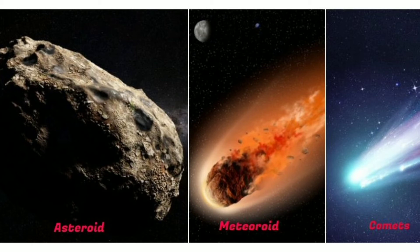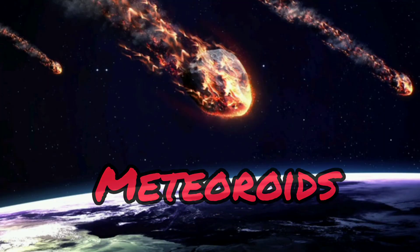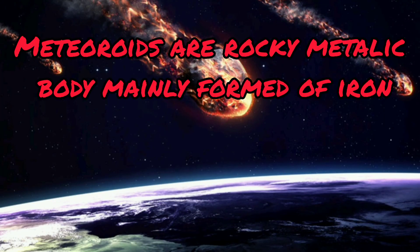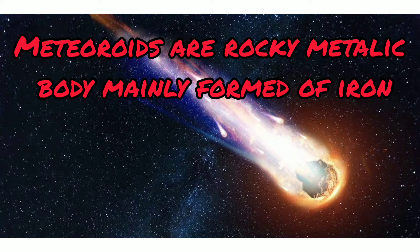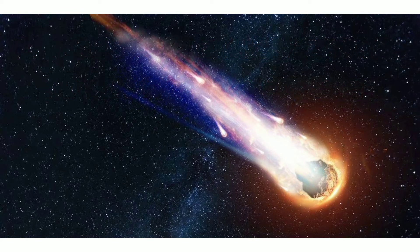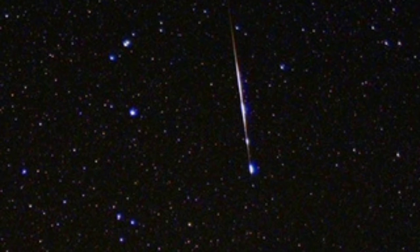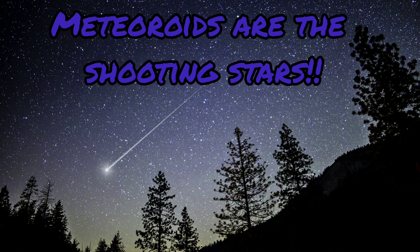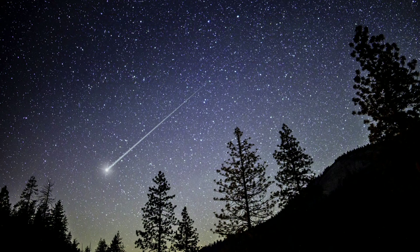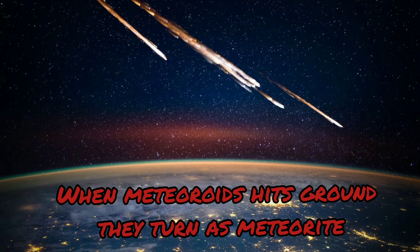Next type of small bodies in the solar system is meteoroids. It is a small rocky or metallic body mainly of iron in outer space. When it gets closer to the planets, its outer crust gets burnt and it appears shiny. It is also called as shooting stars. When a meteoroid hit the ground, it is called meteorite.